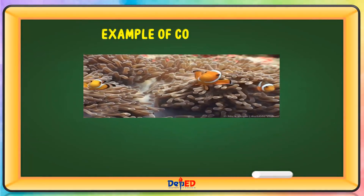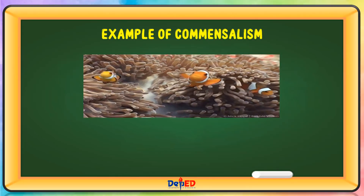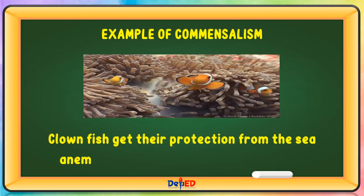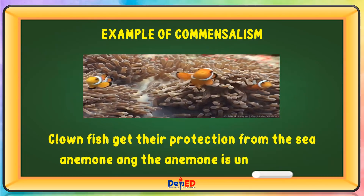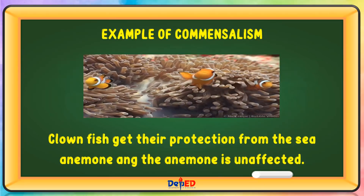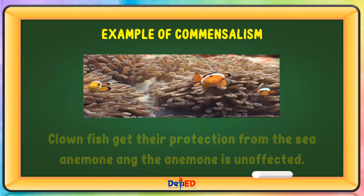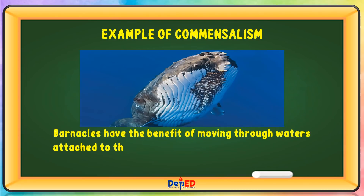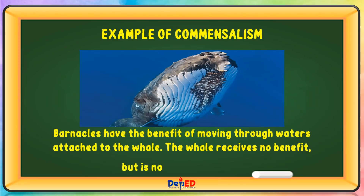Another example of commensalism: clownfish get their protection from the sea anemone, and the anemone is unaffected. Barnacles also demonstrate commensalism — they have the benefit of moving through waters attached to the whale, while the whale receives no benefits but is not harmed either.